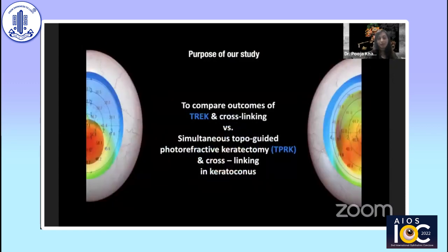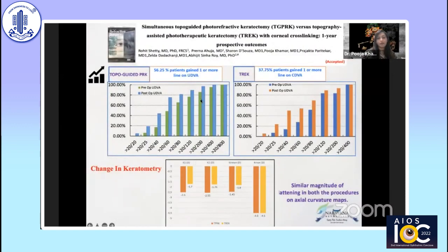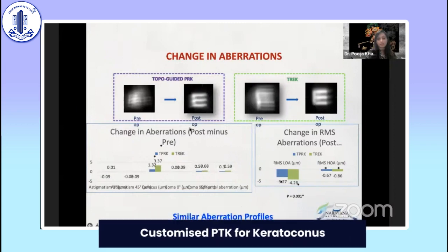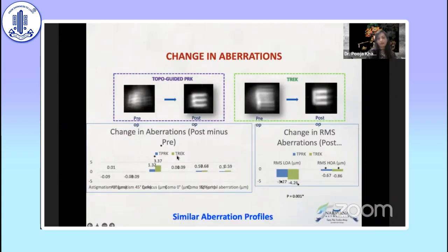Everyone has heard about topo-guided PRK with simultaneous cross-linking. We are now presenting a new technique, so it's important to compare TREK with cross-linking against the routinely performed TPRK procedure. What we found was that in both procedures, patients had similar gain of lines and similar magnitude of flattening on axial curvature maps. Even though we ablate 40 microns in the TPRK procedure, in TREK we are only ablating 20 microns beyond the epithelium — lesser ablation than TPRK cross-linking, yet with similar quantity of vision and flattening. Similar aberration profiles were also observed.